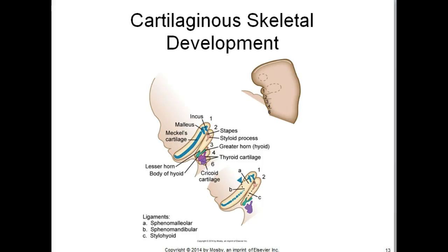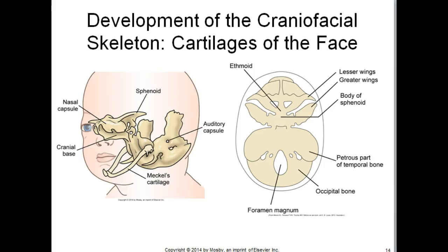Meckel's cartilage is also derived from the first pharyngeal or branchial arch. It forms the template for the mandible. This image illustrates the cartilages of the face. Notice Meckel's cartilage.